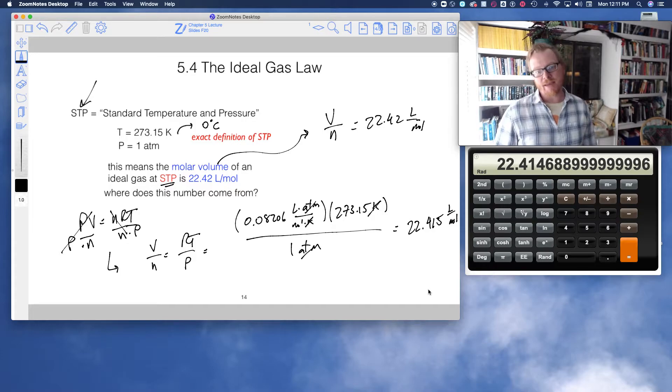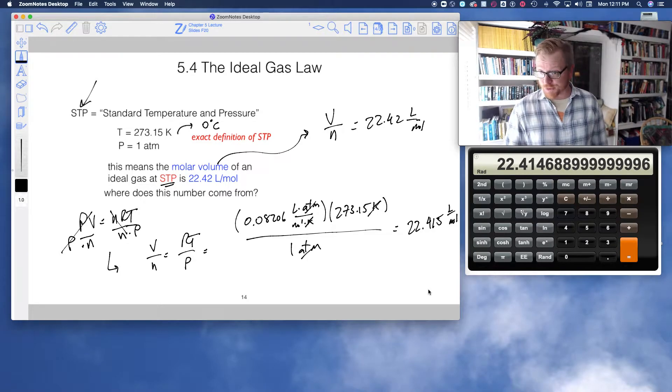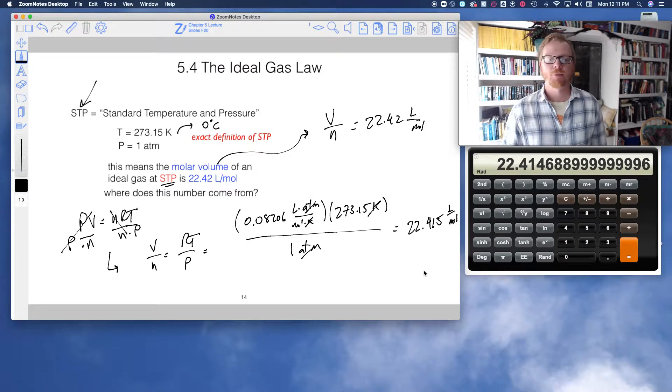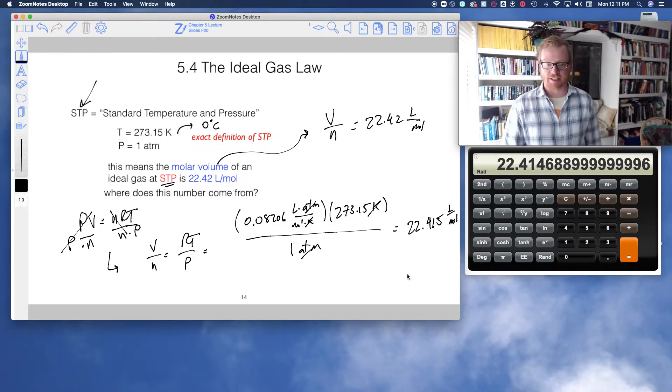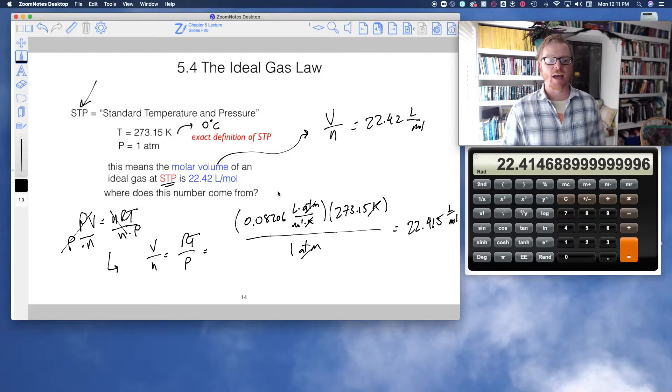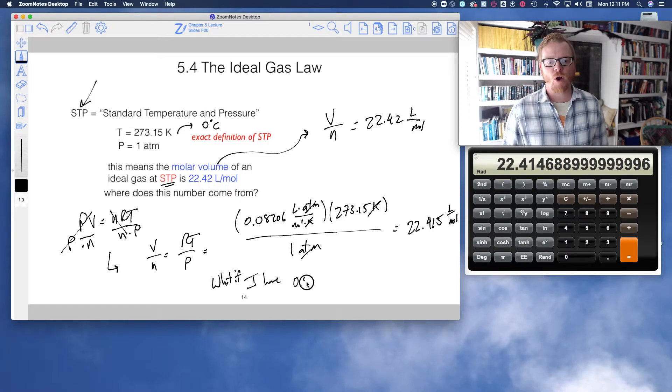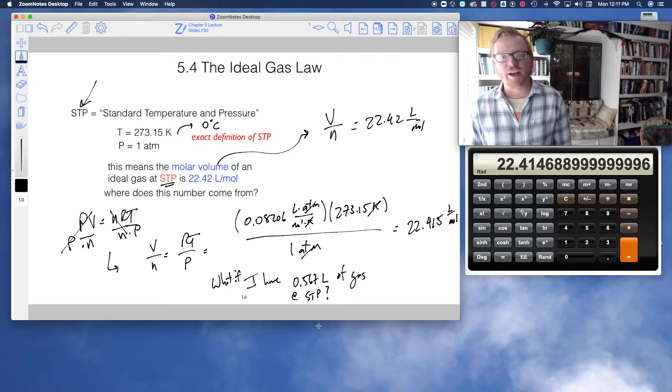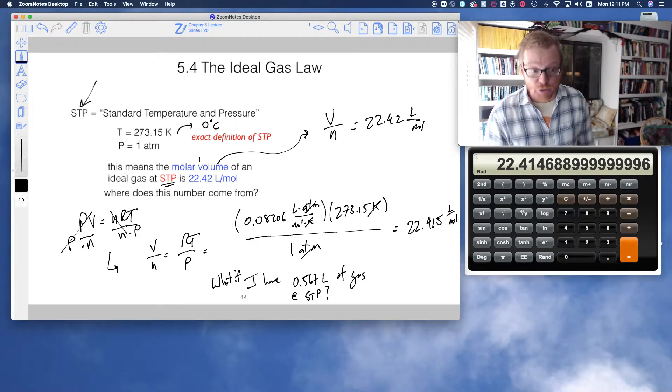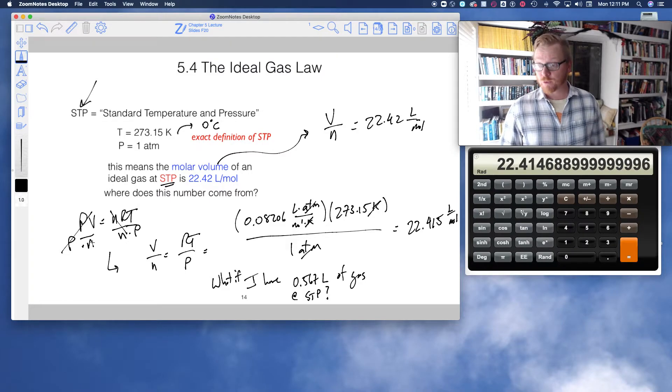So what does that number mean? Well, that number I can use as a conversion factor. What that tells me is if I have one mole of gas, and I'm at standard temperature and pressure, I know that one mole of gas is going to occupy 22.415 liters. What if I have two moles of gas at STP? Well, I could use the ideal gas law to solve for those number of moles.